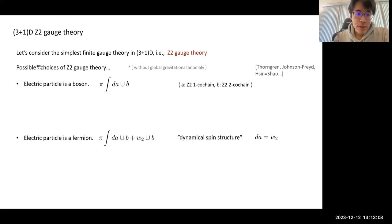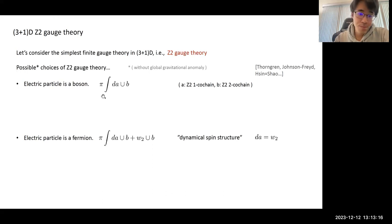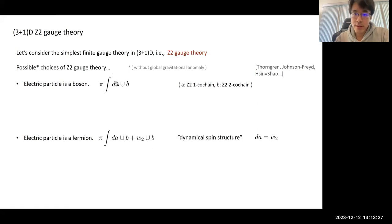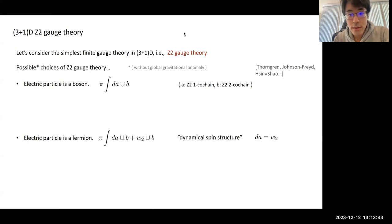These choices are characterized by the self-statistics of the electric particle. One Z2 gauge theory is the ordinary bosonic one, where the electric particle is bosonic — the action is just a BF theory given by a pair of A and B Z2 gauge fields. There is also a variant where the electric particle is fermionic.